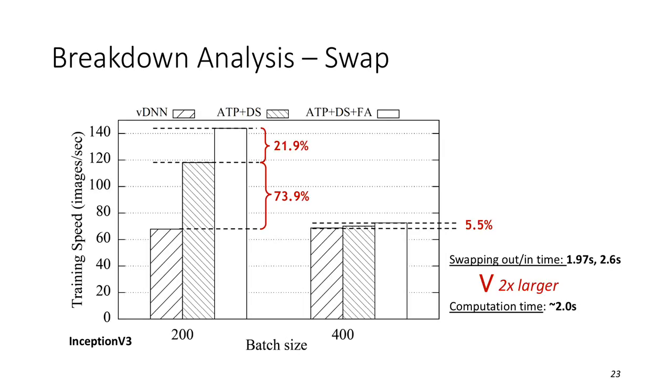We first evaluate Capuchin's mechanisms in swap and recomputation respectively. For swap, at the batch size of 200 ATP and DS together improve the training speed by 73.9%. FA will improve further by 21.9%. At the batch size of 400, Capuchin only improves the training speed by 5.5% totally. This is because the swap time is more than twice larger than computation time. So the computation is far from enough to overlap the data transfer.